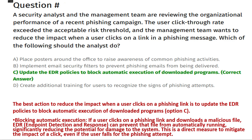A security analyst and the management team are reviewing the organizational performance of a recent phishing campaign. The user click-through rate exceeded the acceptable risk thresholds, and management wants to reduce the impact when a user clicks on a link in a phishing message. Which of the following should the analyst do? Option A: place posters around the office. Option B: implement email security filters. Option C: update the EDR policies to block automatic execution of downloaded programs. Option D: create additional training for users.